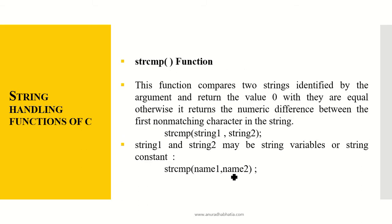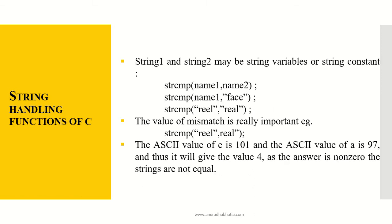Let's see what is the strcmp function. This function compares two strings identified by the argument and returns a 0 when they are equal. Otherwise, it returns a numeric difference between the first non-matching character in the string. So the syntax is strcmp str1 and str2. Str1 and str2 may be string variables or string constants. So strcmp name1, name2. Let's see how it works.